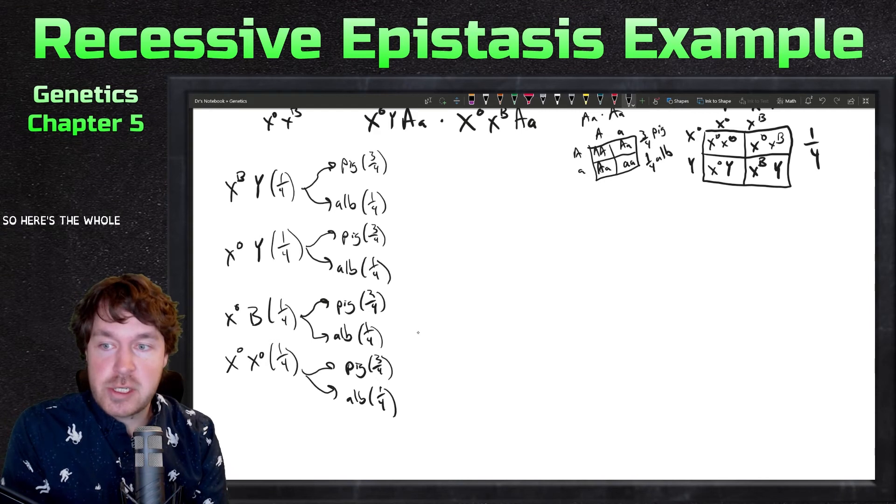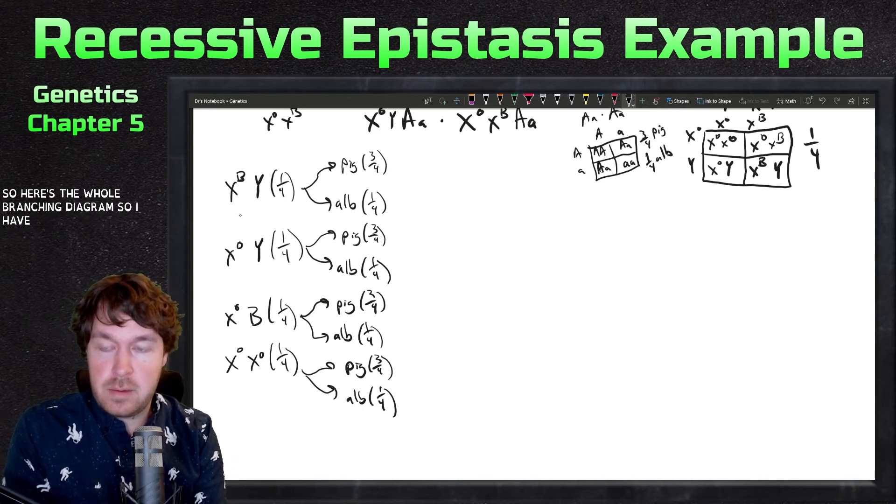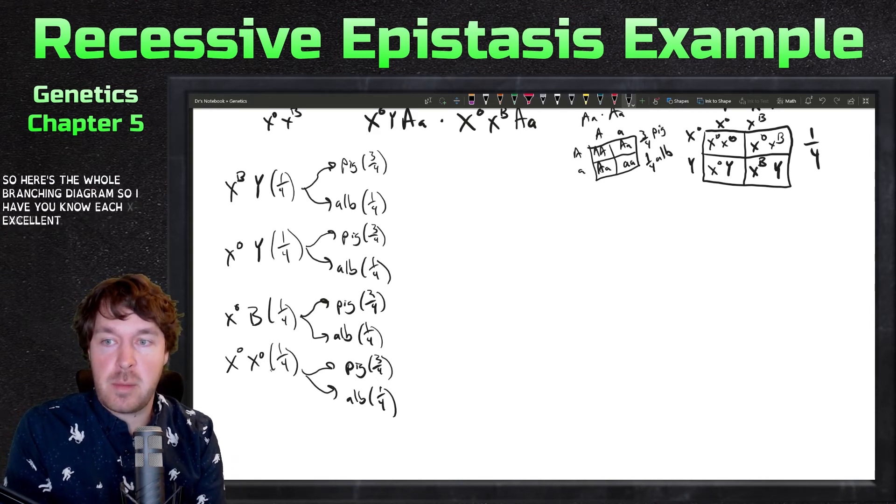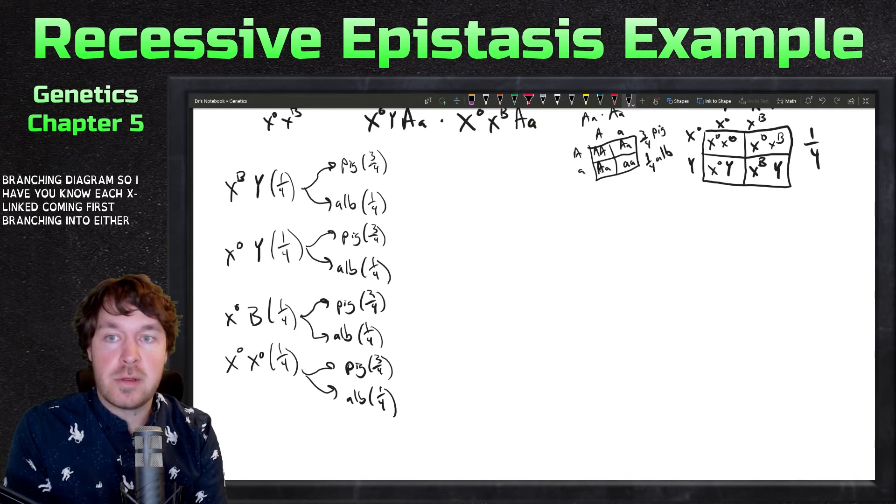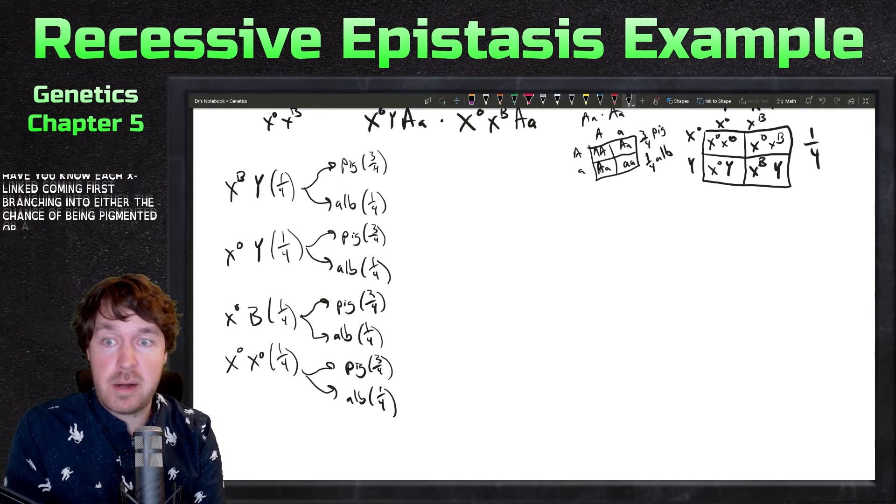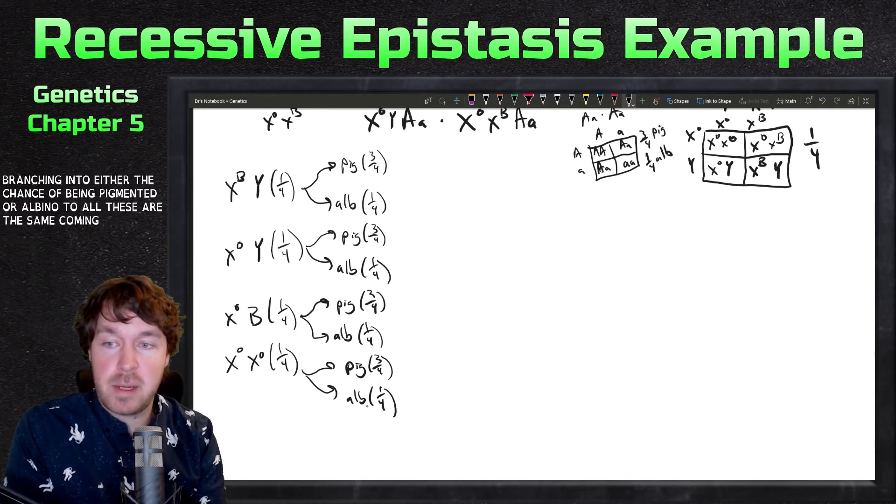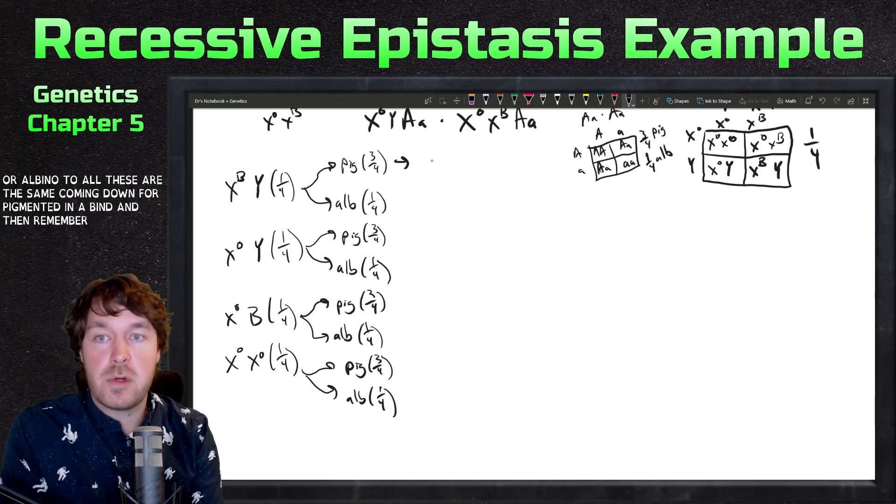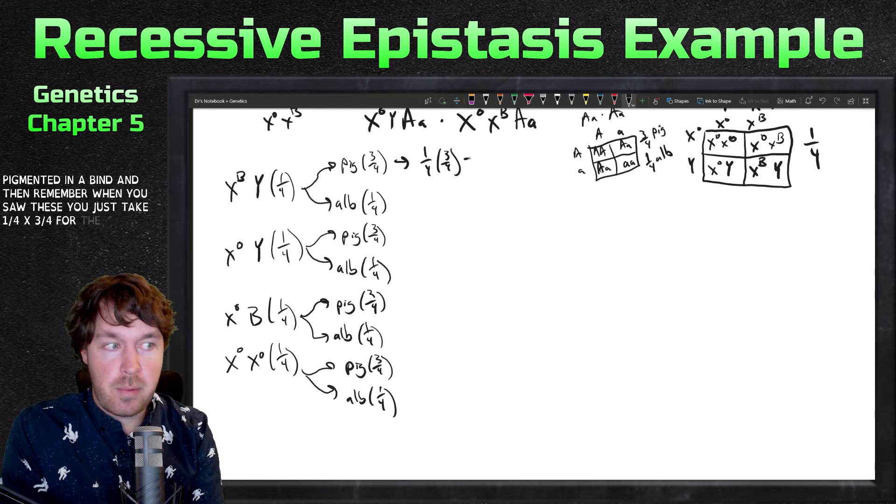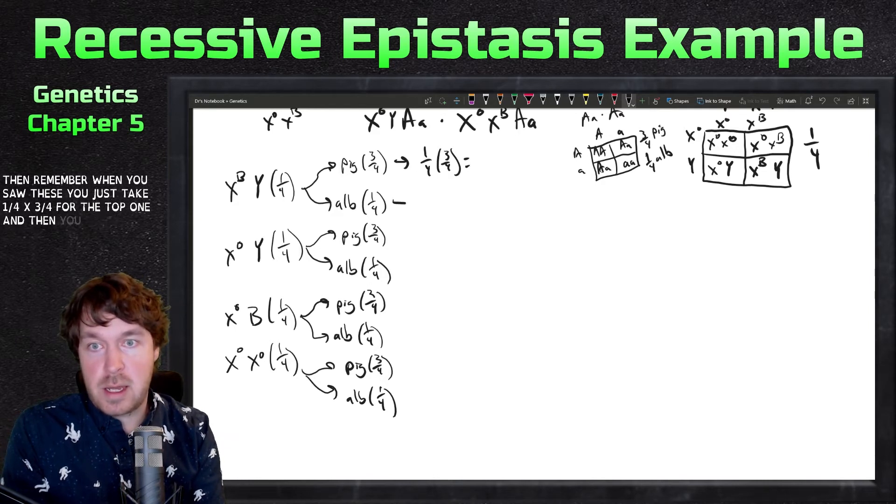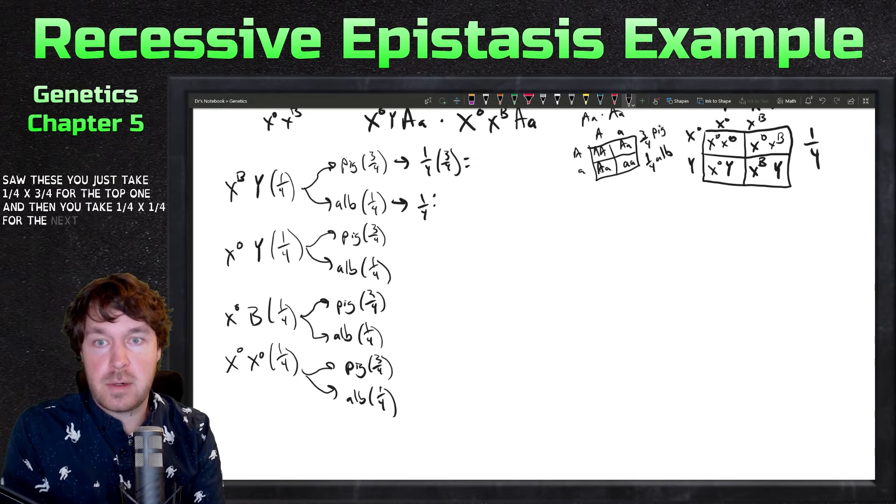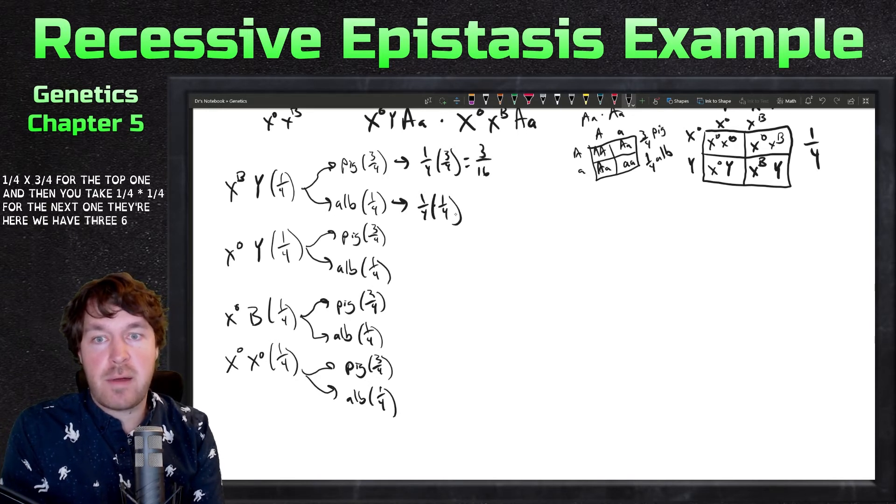Here's the whole branching diagram. I have each X-linked coming first, branching into either the chance of being pigmented or albino. All of these are the same coming down for pigmented and albino. Remember when you solve these, you just take one-fourth times three-quarters for the top one, and then you take one-fourth times one-fourth for the next one. Here we'd have three-sixteenths, of course, then here we'd have one-sixteenth. I'm going to do the rest - they'd be the same answers.